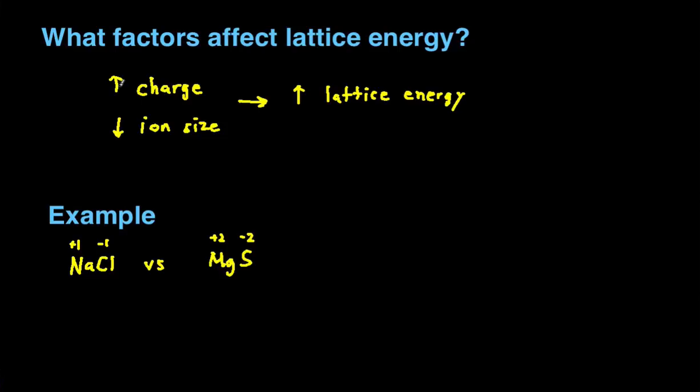When we're looking at charge, we're looking at larger charges. You want to multiply the two charges together and see which gives you a larger product. So +1 times -1 is going to give you -1, and +2 times -2 is going to give you -4.